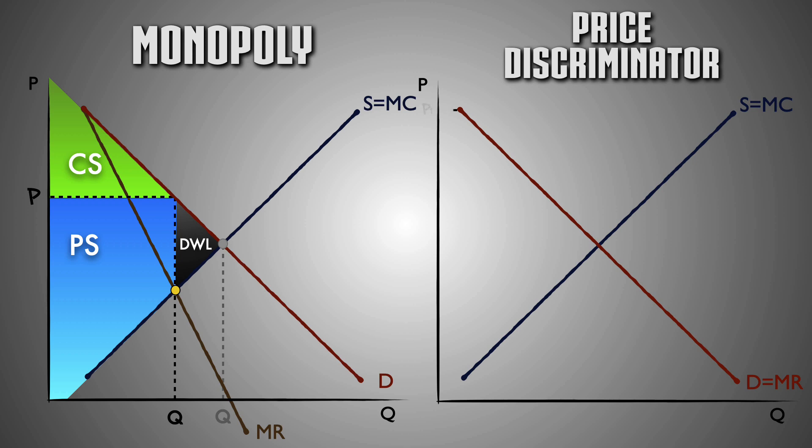By contrast, because the price discriminator can charge consumers the highest price they are willing and able to pay, the marginal revenue earned from each additional unit sold is equal to the price charged at every quantity demanded. This means that marginal revenue equals demand at every output level for the price discriminator.